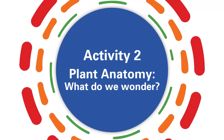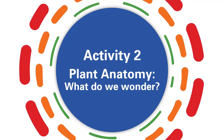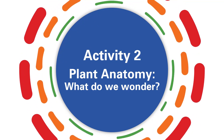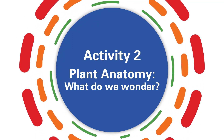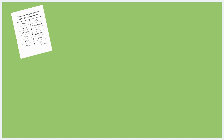The goal of activity two is to expand children's learning by asking: what do we wonder? For this activity, you will need the following materials: the documentation panel from Apply Science Activity 1, characteristics of roots, stems, and leaves; and two sheets of large paper, 25 by 30 inches, for the prediction panel.